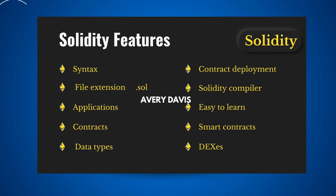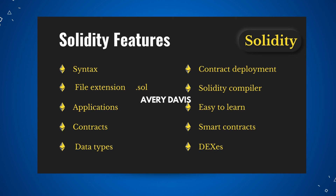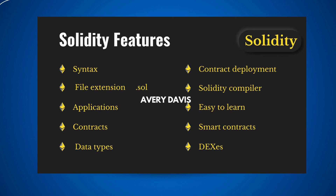The fifth feature is data types: every programming language has its own data types — arrays, booleans, numbers — and Solidity has its own as well, including uint (unsigned integer), int (signed integer), boolean, fixed arrays, dynamic arrays, enums, and structs. The sixth feature is contract deployment: whatever contract you write in Solidity can be deployed on the Ethereum blockchain or Polygon blockchain, since all of these blockchains accept smart contracts and follow the EVM (Ethereum Virtual Machine) protocol.